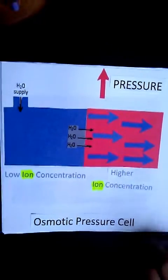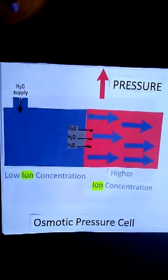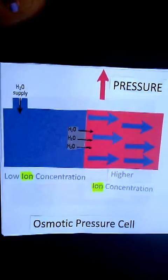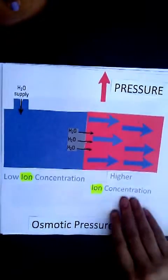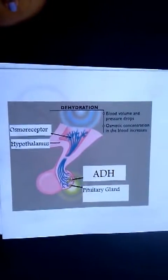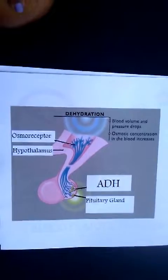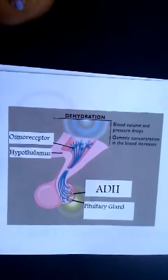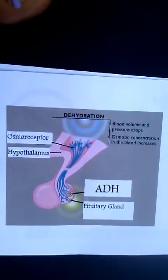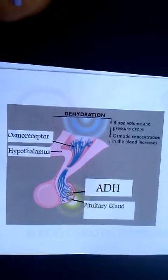When looking at the blood osmotic pressure controlled by the kidneys, we are looking at the movement of water from the blood to surrounding tubules and vesicles. Osmoreceptors, which are frequently found in the hypothalamus, are cells that are sensitive to osmotic pressure changes and can trigger the release of the antidiuretic hormone, ADH.